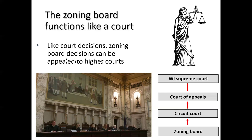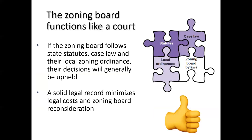If someone chooses to appeal a zoning board decision, it doesn't mean you did anything wrong — it just means they didn't like your decision. Typically they would appeal first to circuit court, then to the court of appeals, and then to the Wisconsin Supreme Court. If your zoning board follows the three types of law — state statutes, case law, and your local zoning ordinance — then your decisions are typically going to be upheld. Good documentation of why you reached the decision minimizes legal costs and zoning board reconsideration.